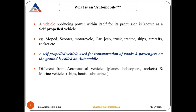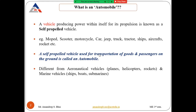A self-propelled vehicle that is used for the transportation of goods and passengers on the ground is known as an automobile. So the self-propelled vehicles we use to transport goods and passengers on the ground are called automobiles.